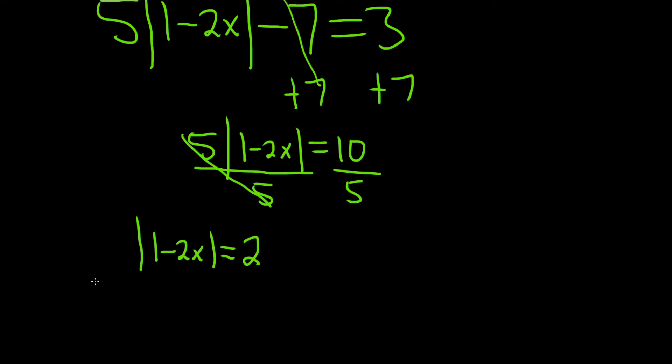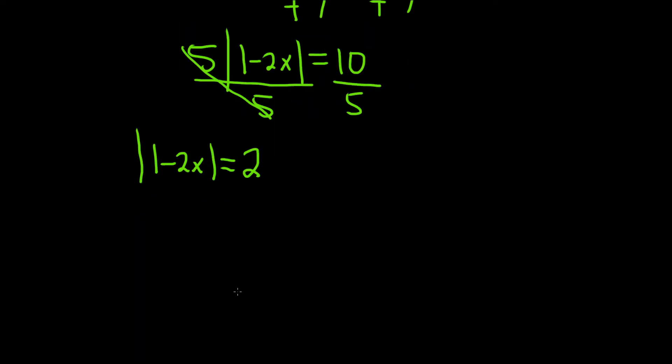Okay, so now there's a rule. Basically, whenever you have the absolute value by itself and it's equal to a positive number, what you do is you drop the absolute value, and you keep the number, and then you do the same thing, and then you just flip the sign. You put a negative in front of the number, so it's really key.